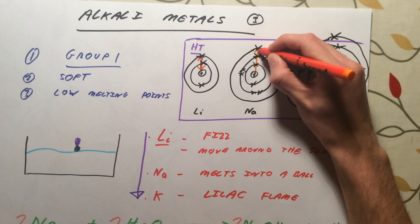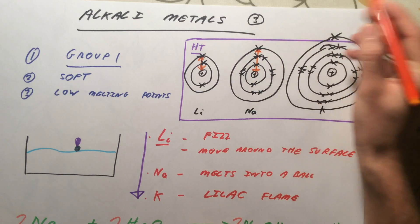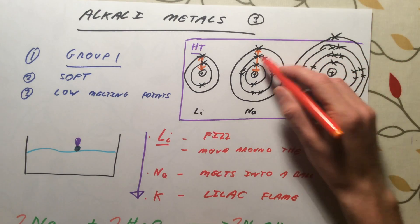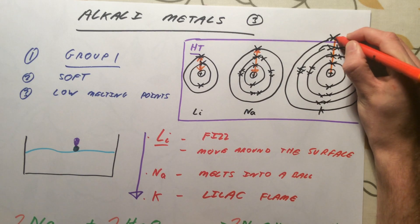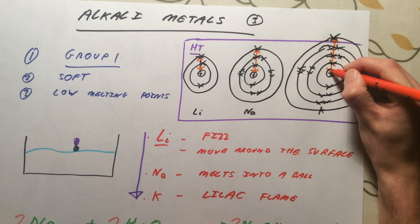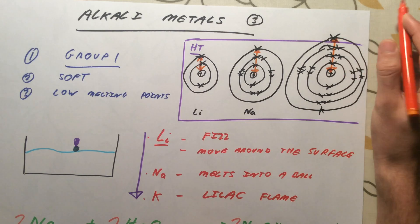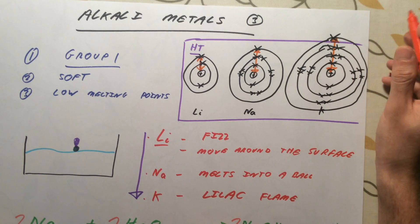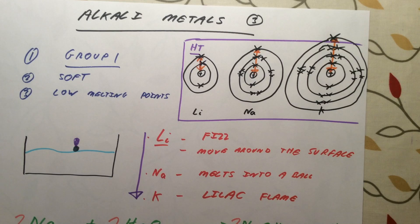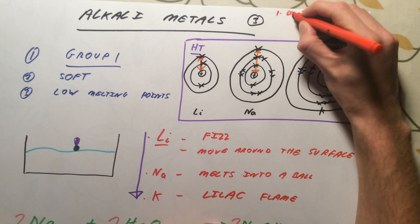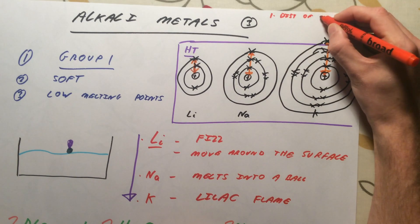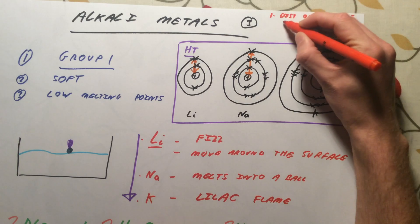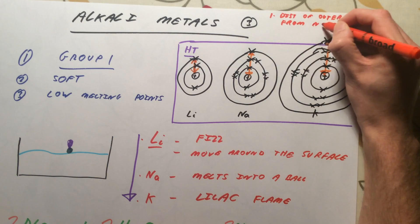In sodium, the distance between the positively charged nucleus and the outer electron is slightly larger. So the force, electrostatic force between these is a bit weaker, so this electron is more easily lost. For potassium, it has got the largest distance of the three between the outer electron and the nucleus. Therefore, the force of attraction between these is weaker, so the electron is even more easily lost. So factor number one that we need to be able to talk about is the distance of outer electron from the nucleus.